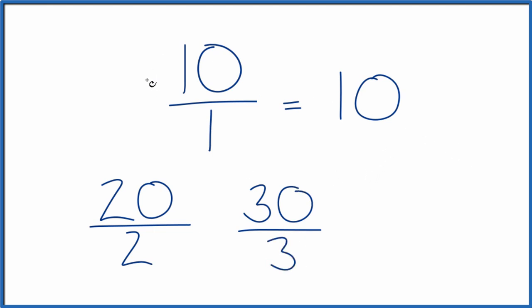One more. How about we multiply the numerator and the denominator by 7. 7 times 10, that's 70. And 7 times 1 is 7. So these are all equivalent fractions for 10.